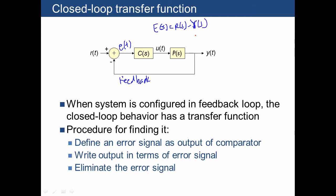This is fed into the rest of our system where we know that Y of S is just going to be equal to P, and I'm not going to keep writing the S's over and over again, so I'll just write P times C times E, where we can plug in what we found for E, so we get P times C times R minus Y.